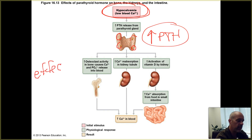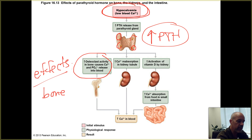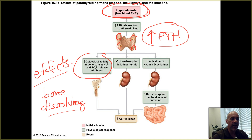Here are the effects of PTH. It increases osteoclast activity — osteoclasts are bone-dissolving cells. They secrete acids which help break down the calcium phosphate matrix in osseous tissues. Those calcium ions and phosphate ions that are in the bone matrix end up returned to the blood, and then the blood transports them throughout the body. This helps raise calcium levels in the blood.